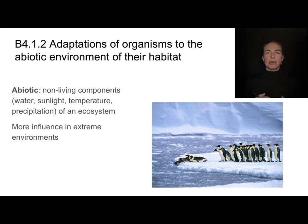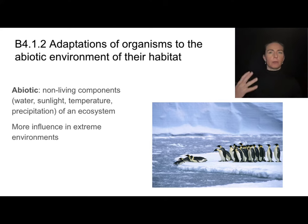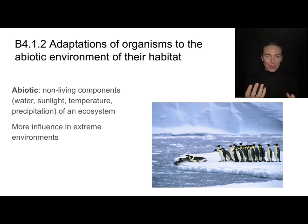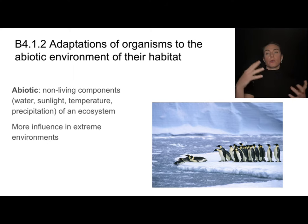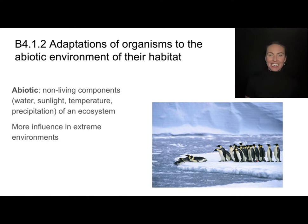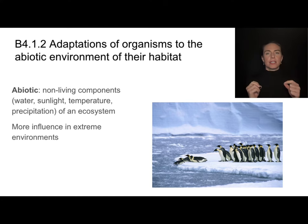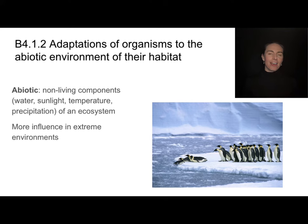Abiotic factors are things in an ecosystem like water, temperature, sunlight, or precipitation that give that ecosystem its characteristics. They tend to have more of an influence in extreme environments, like deserts or Antarctic ice. When we think about what drives natural selection in different organisms, we really want to have these abiotic components in mind.